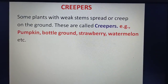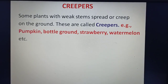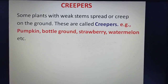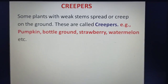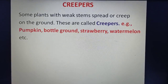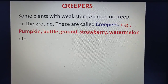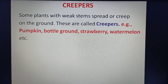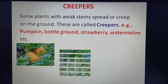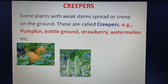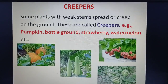Creepers: Some plants with weak stems spread or creep on the ground. These are called creepers. Some examples of creepers are Pumpkin, Bottle Gourd, Strawberry and Watermelon.